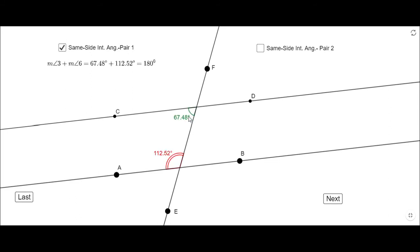You notice the sum of the measure of these two angles is 180. They are supplementary. Always the same side interior angles or consecutive angles are supplementary, and we have one more set.